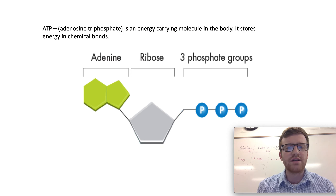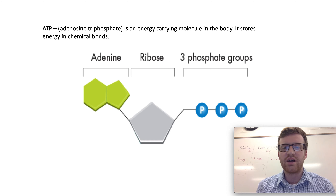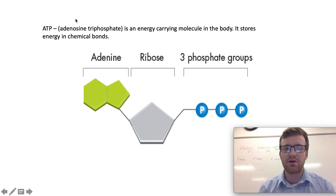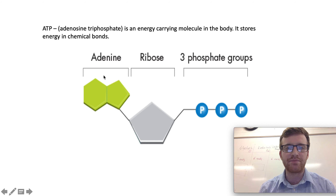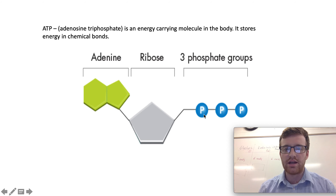ATP stands for adenosine triphosphate. It is an energy-carrying molecule in the body. It stores energy in the chemical bond. So we can see here this is the molecule of ATP. Here is the adenine, here is the ribose, and here are the three phosphate groups.